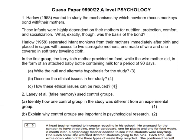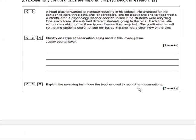Starting off with the first question: Harlow wanted to investigate the mechanism by which newborn rhesus monkeys bond with their mothers. These infants were highly dependent on their mother for nutrition, protection, comfort and socialization. Harlow separated them immediately afterward and placed them in cages. In the first group, the terry cloth mother provided no food while the wired mother did, in the form of an attached baby bottle containing milk. Write a null and alternative hypothesis for the study, identify the ethical issues, and explain how these ethical issues can be reduced.